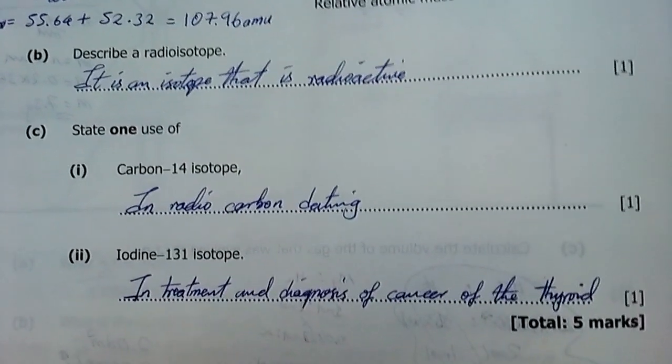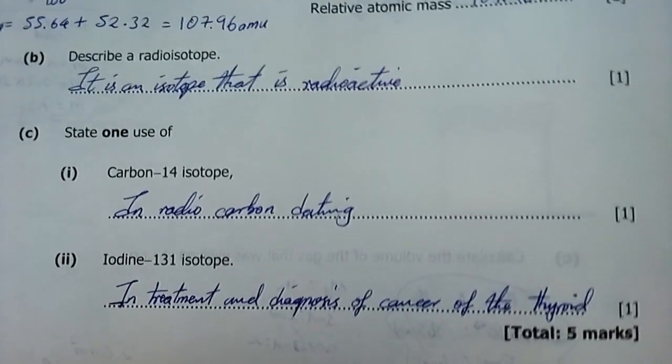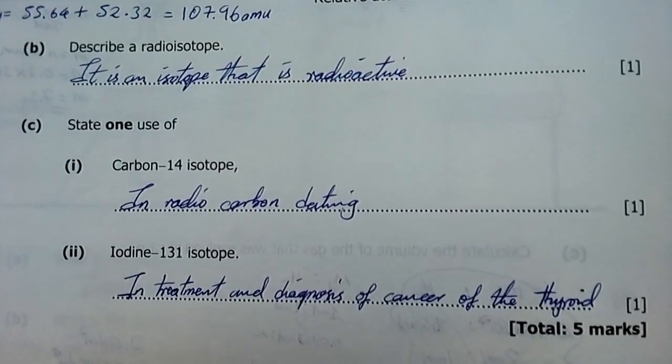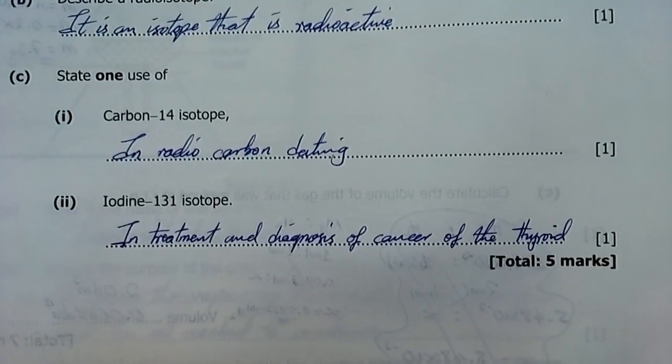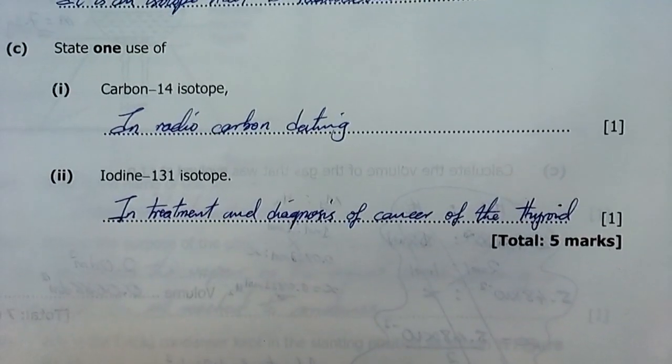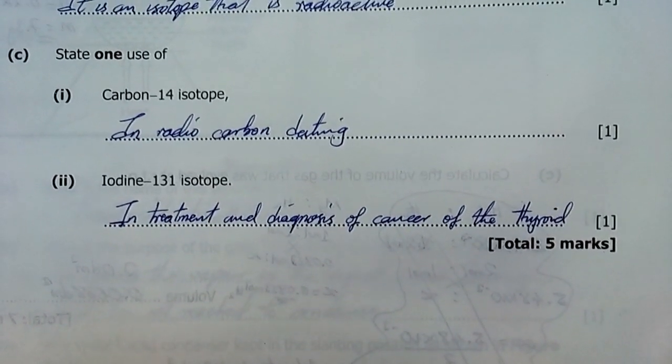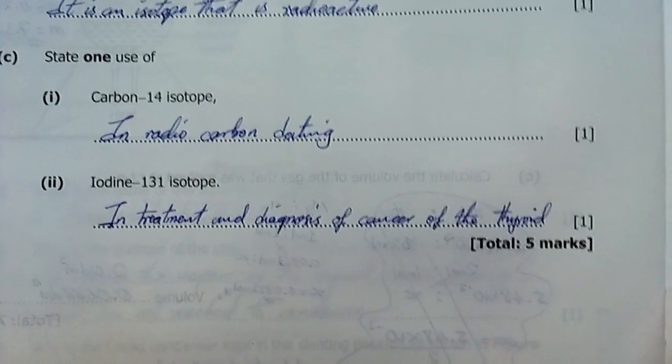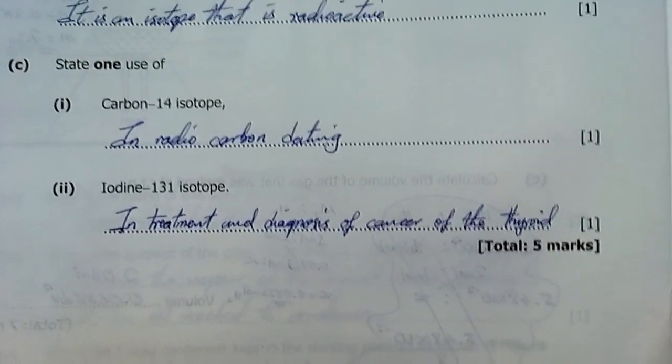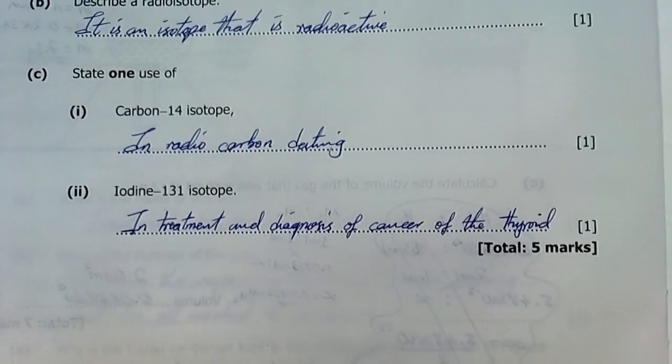Describe a radioisotope. It is an isotope that is radioactive. State one use of carbon-14 in radiocarbon dating: dating the age of organic fossil remains. Iodine-131 isotope: what could be one of the main uses of this isotope in the treatment and diagnosis of cancer of the thyroid? As you note, iodine is used in the making of thyroxine, a major growth hormone, especially in younger children. Therefore, it's used in the treatment and diagnosis of cancer of the thyroid.